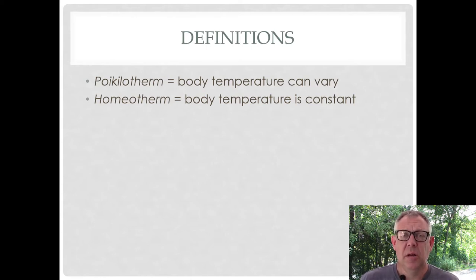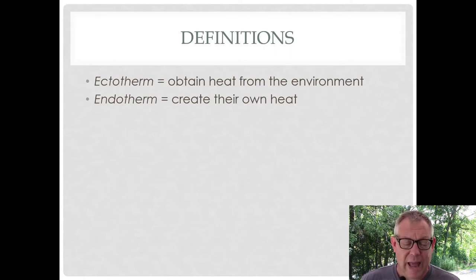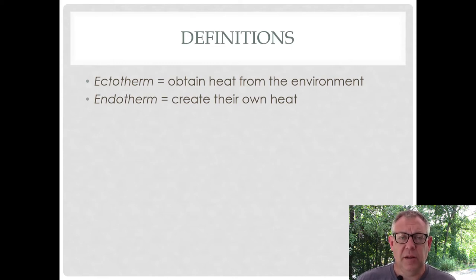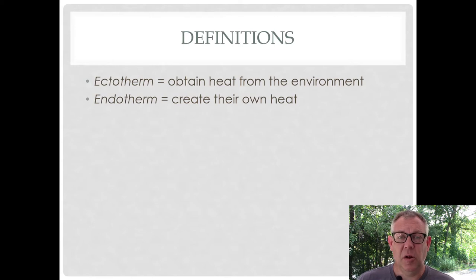A lot of times people might use the terms cold-blooded or warm-blooded here. We've got two other terms that I want you to know: ectotherm and endotherm. Ectotherm means the organism gets their heat from the environment, whereas endo means inside — endotherm means the organism creates its own heat.